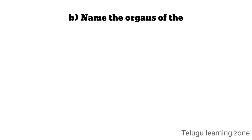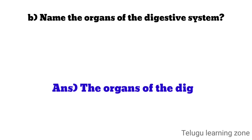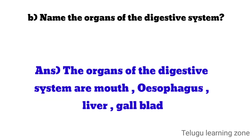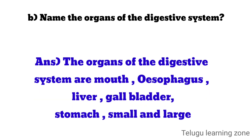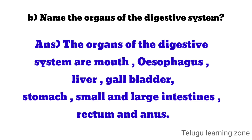Name the organs of the digestive system. The organs of the digestive system are mouth, esophagus, liver, gallbladder, stomach, small and large intestines, rectum, and anus.